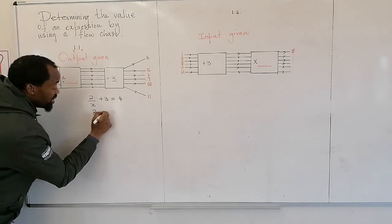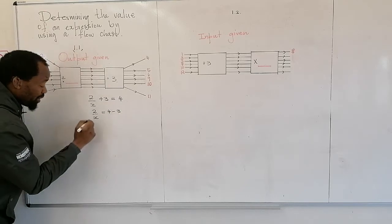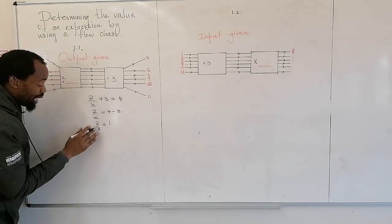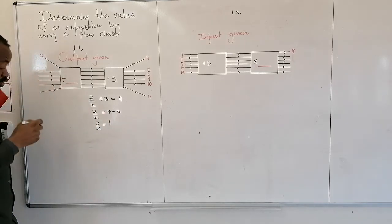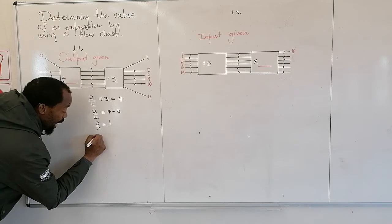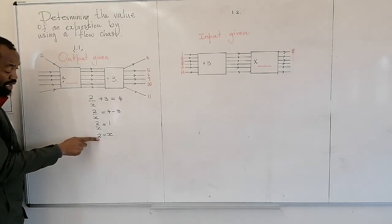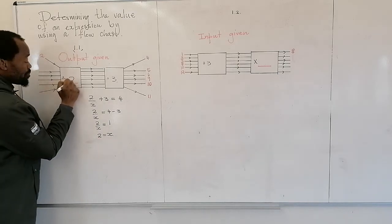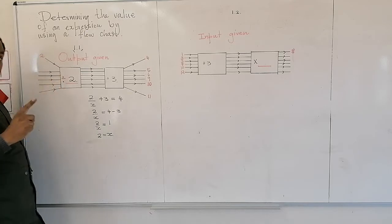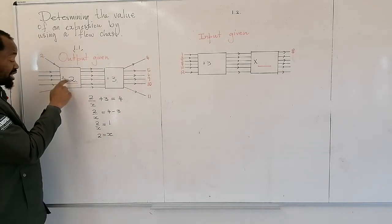I am going to take this 3 to my side. Because it was a plus, it becomes minus. Then this becomes 2 divided by x, which is equal to 4 minus 3, which is 1. Then I multiply 1 by x, which gives x. That means the number we did not know is 2. I put a 2 there. You must test whether the answer is correct: 2 divided by 2 is 1, and 1 plus 3 is 4. That means this value is correct.